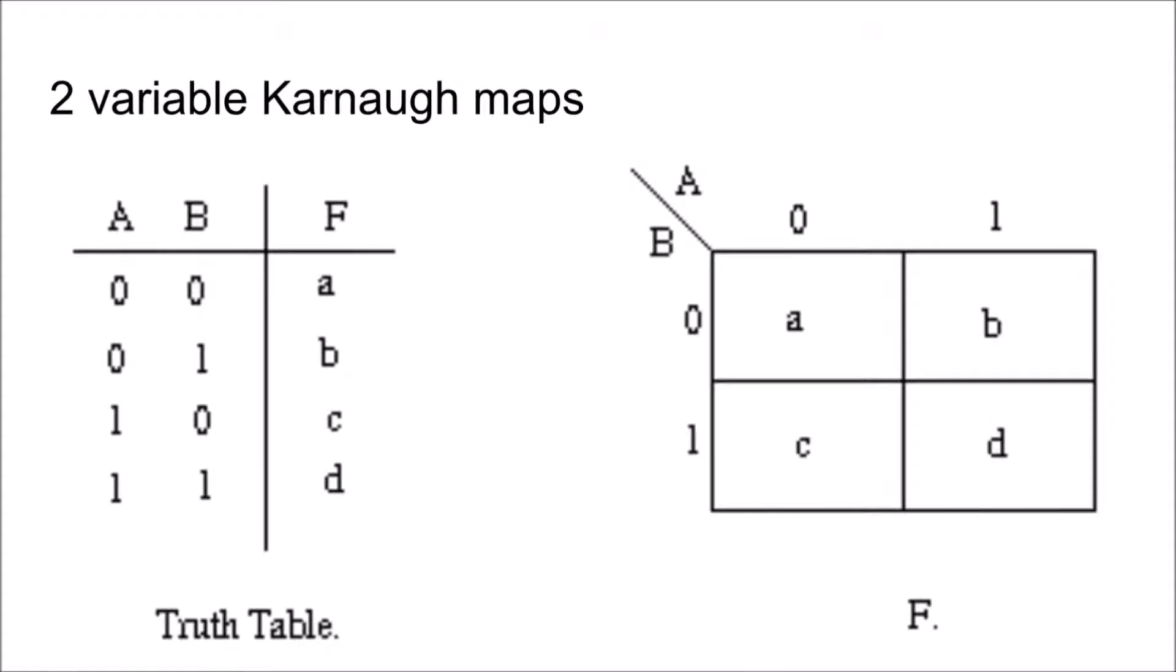In a two variable Karnaugh map, the values inside the Karnaugh map are copied from the output column of the truth table, so every input and output can be represented by the Karnaugh map.